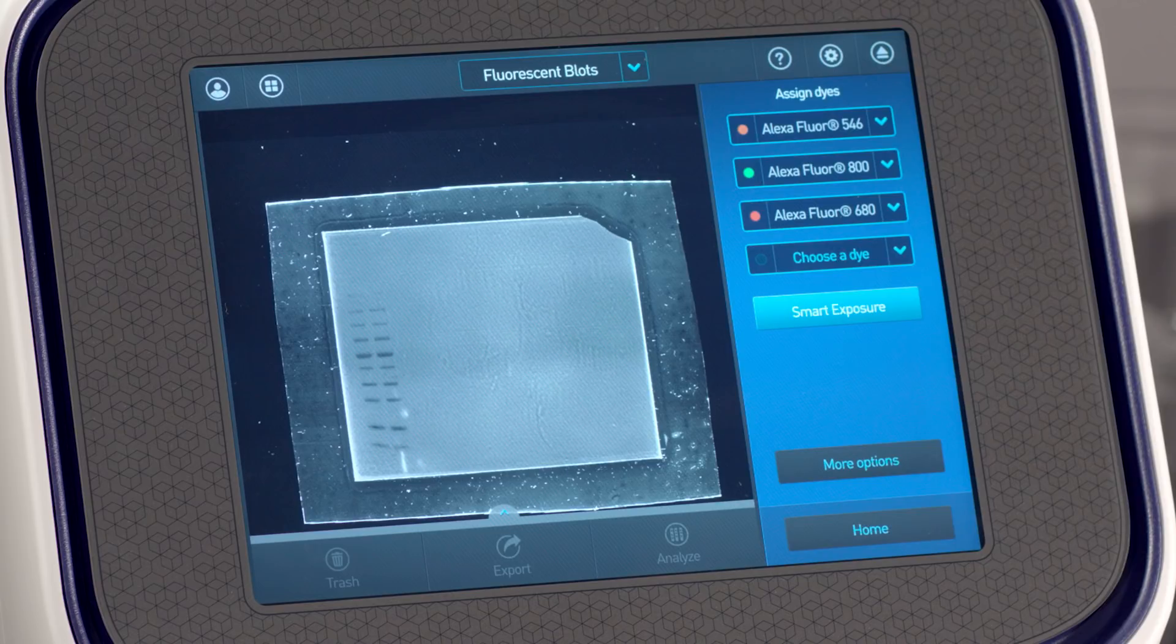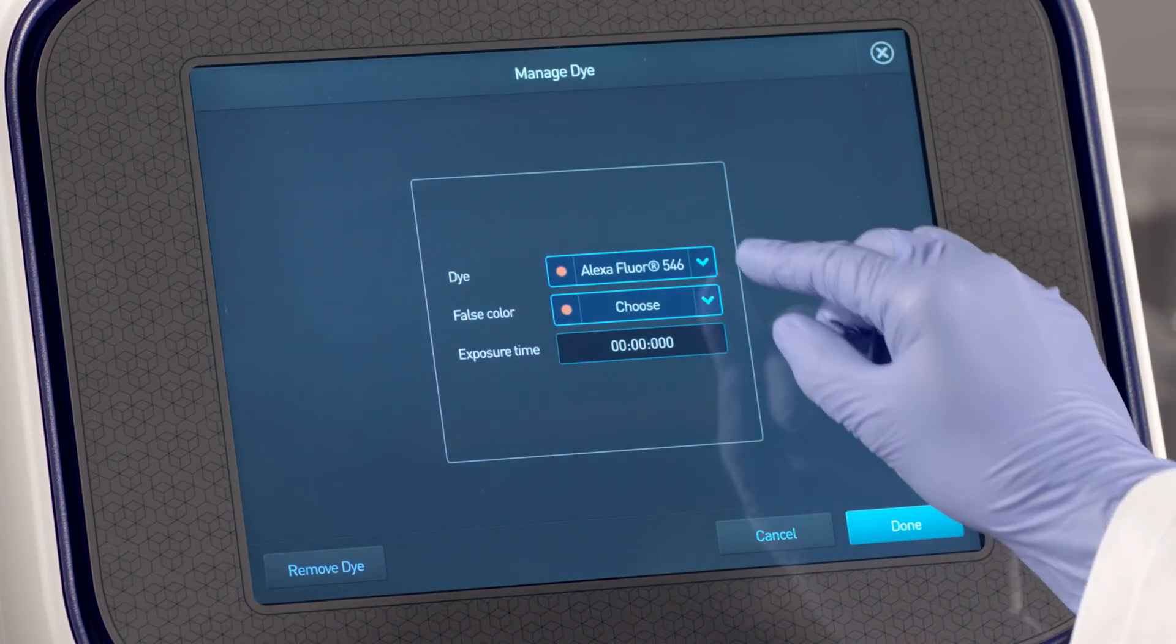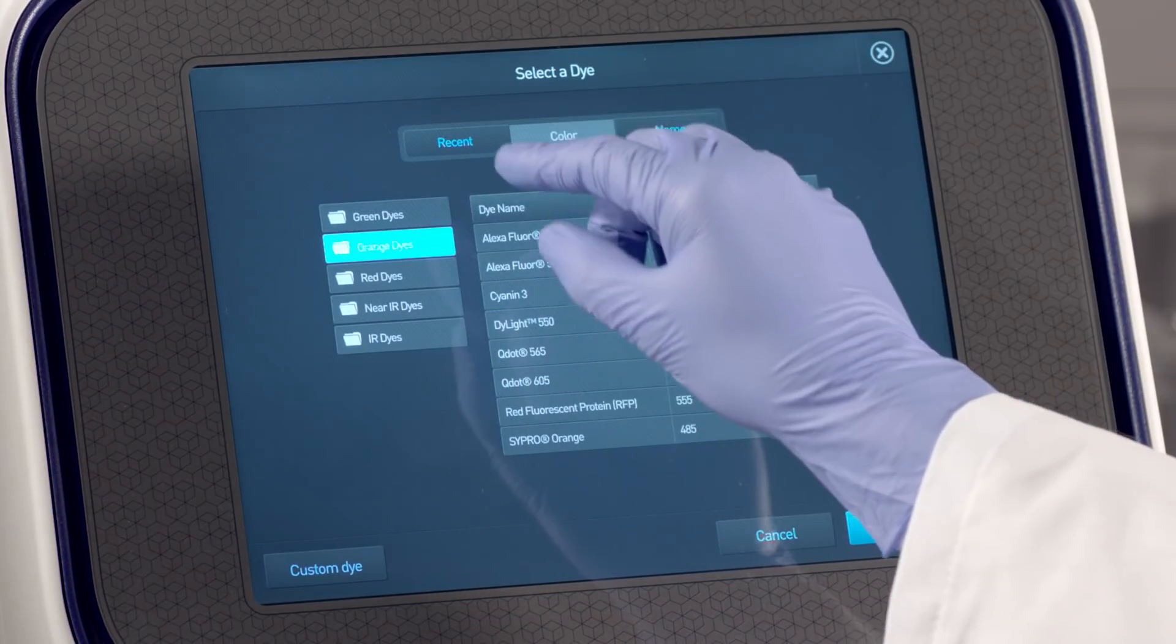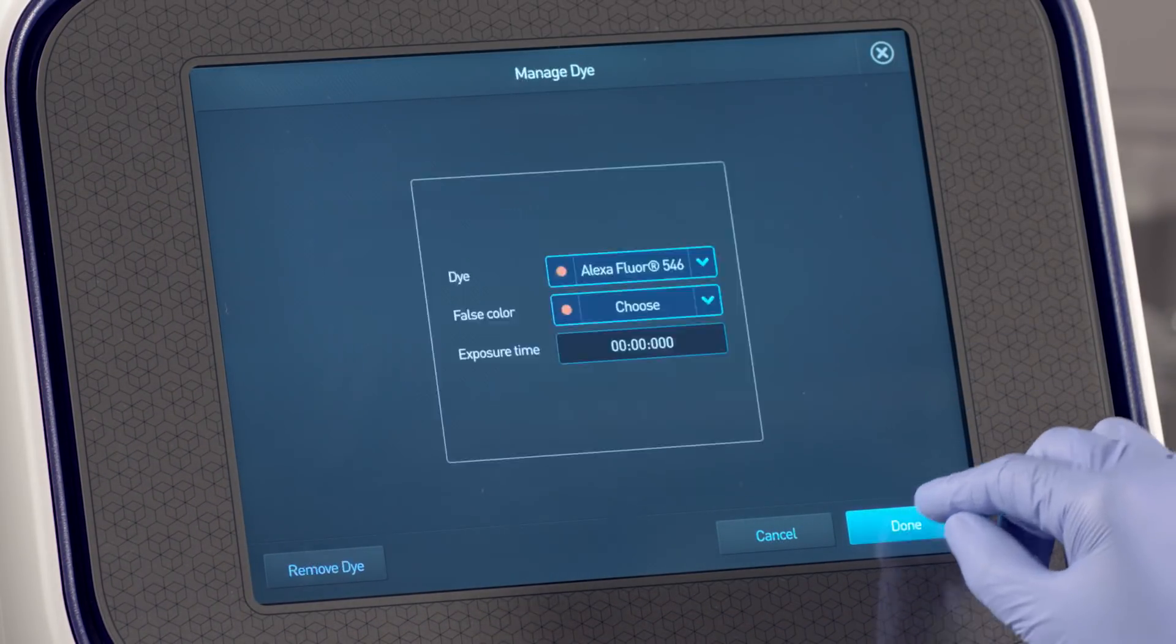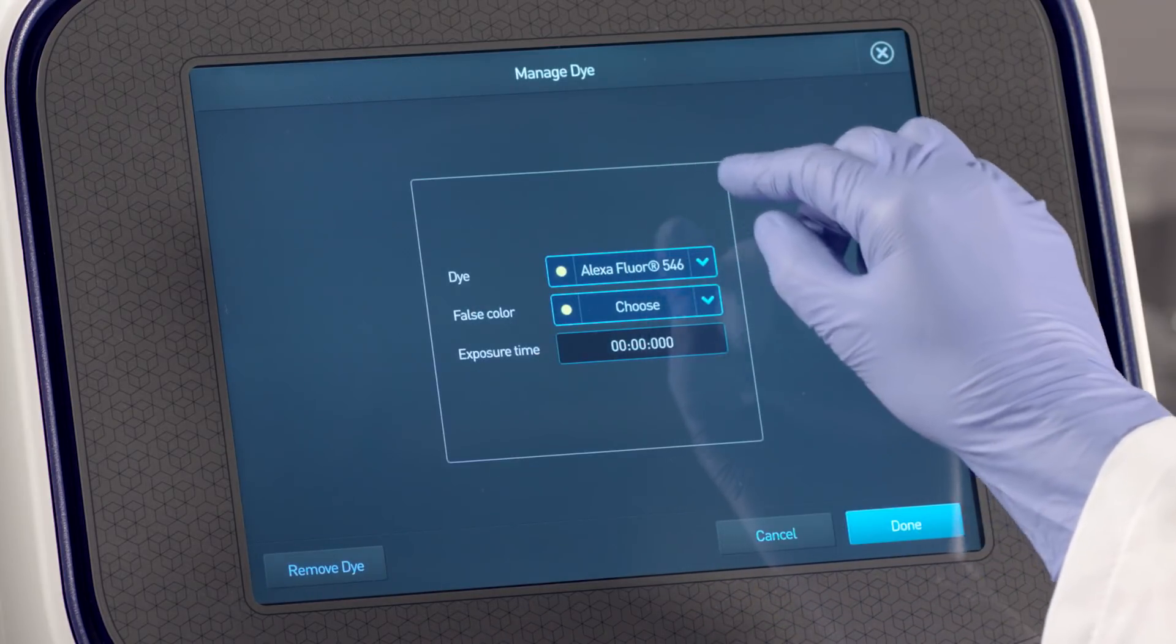To assign a dye, select from a series of preloaded dyes, or you can also create specifications for and assign a custom dye. False color can be assigned to the dye based on visualization preferences.